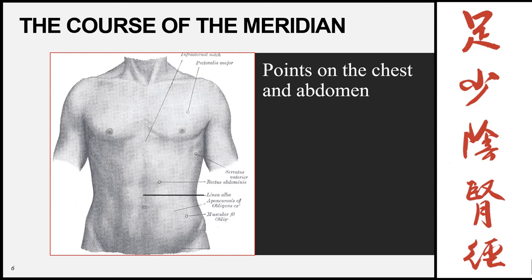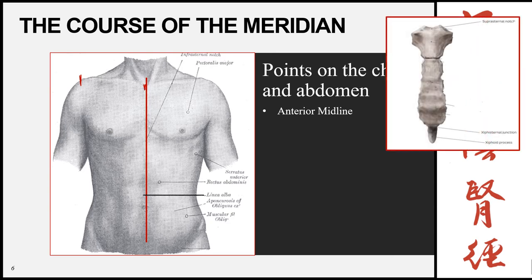This slide shows the flow of the meridian on the chest and torso. Many of the points on the chest and torso share the same distance from the midline, so knowing this allows you to locate many points. First, find the anterior midline, then find the midpoint of the clavicle by locating the tip of the acromion and the suprasternal notch and finding the midway point. Divide the clavicle into four equal parts. The meridian starts closer to the midpoint on the abdomen — 0.5 cun from the midline — and then goes wider towards the upper abdomen.